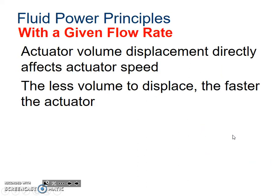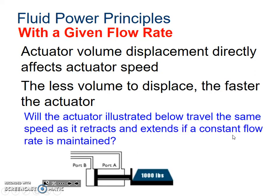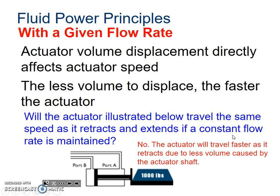So with a given flow rate, we can actually create and actuators directly affect the actuator's speed, so less volume to displace means faster actuator. So the question is, will the actuator illustrated below travel the same speed as it's retracting and extending if the constant flow rate is maintained? No, and that's because the actuator will travel faster as it's retracted due to less volume because of the actuator's shaft.